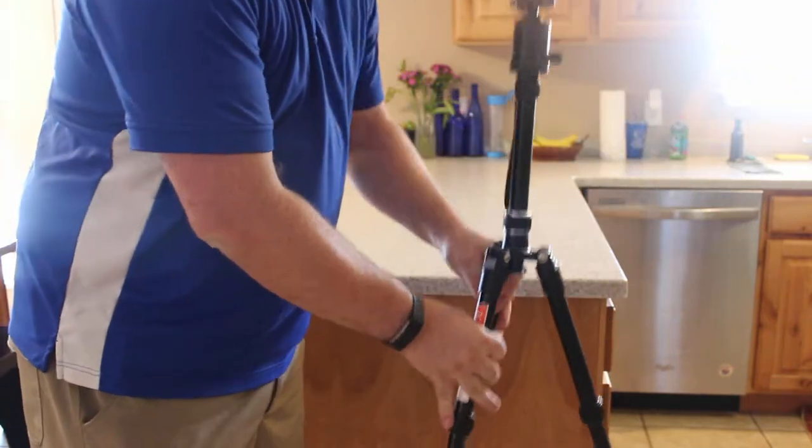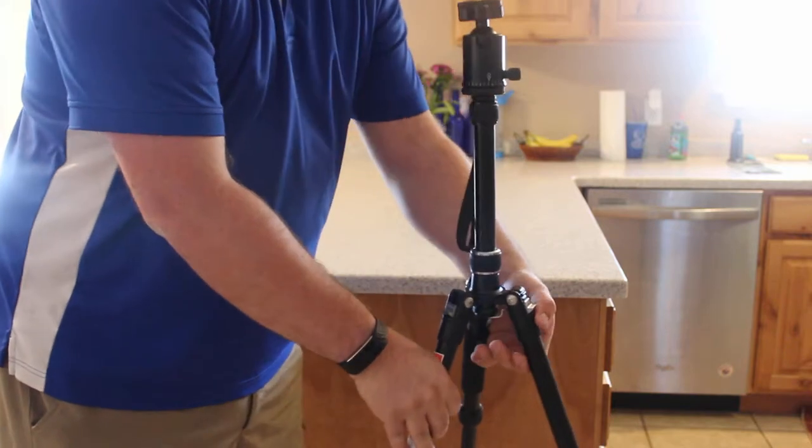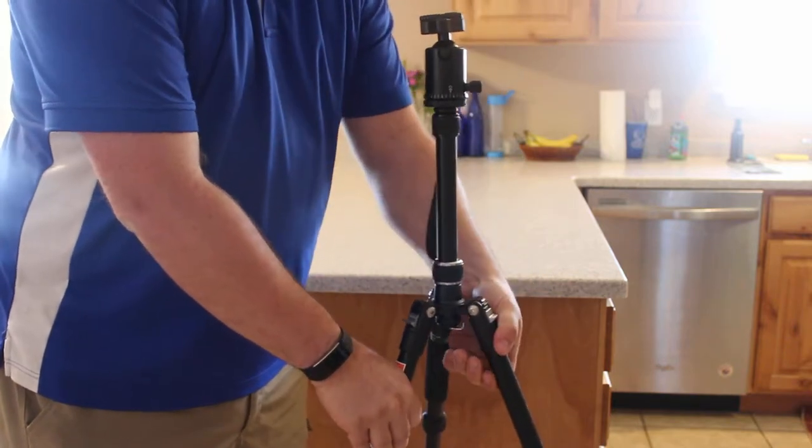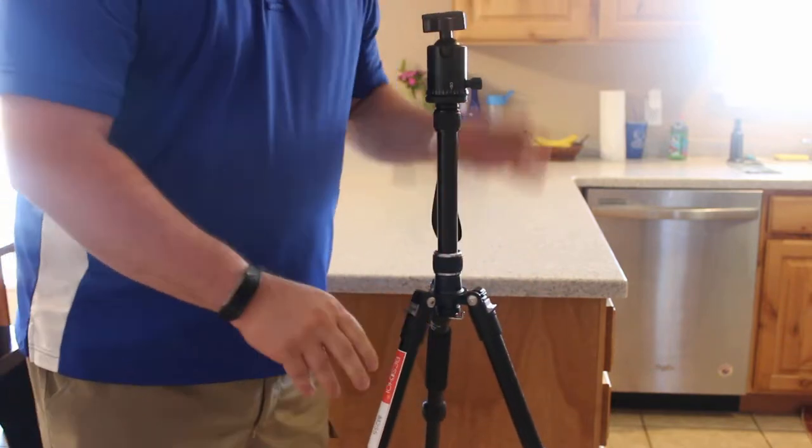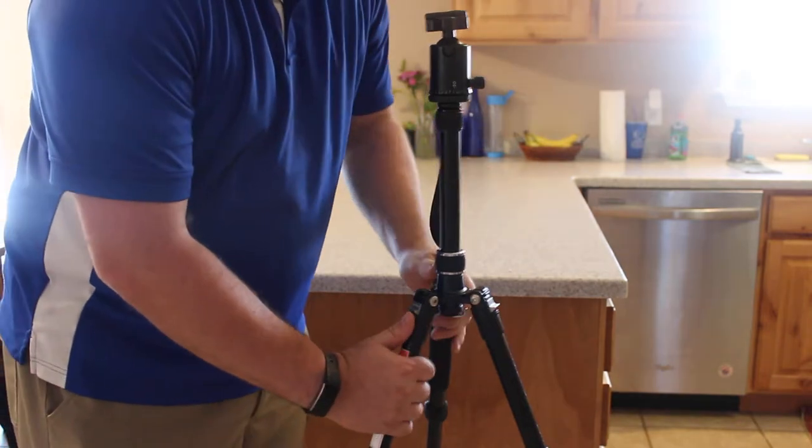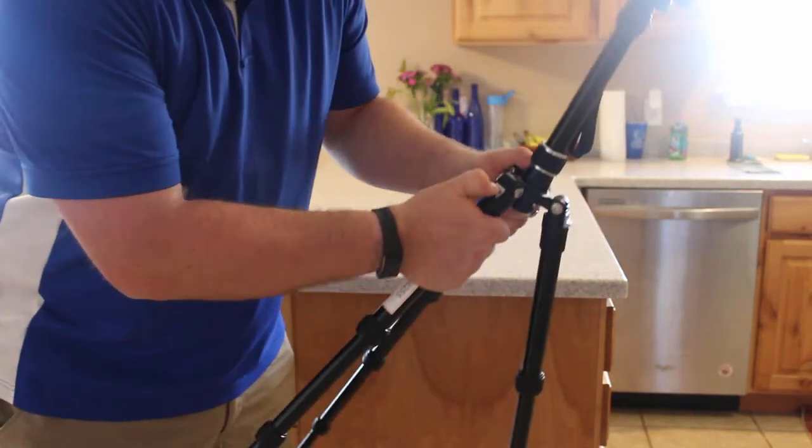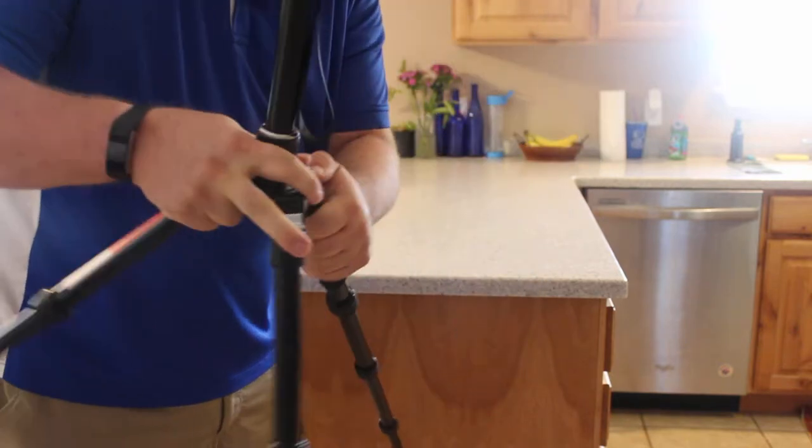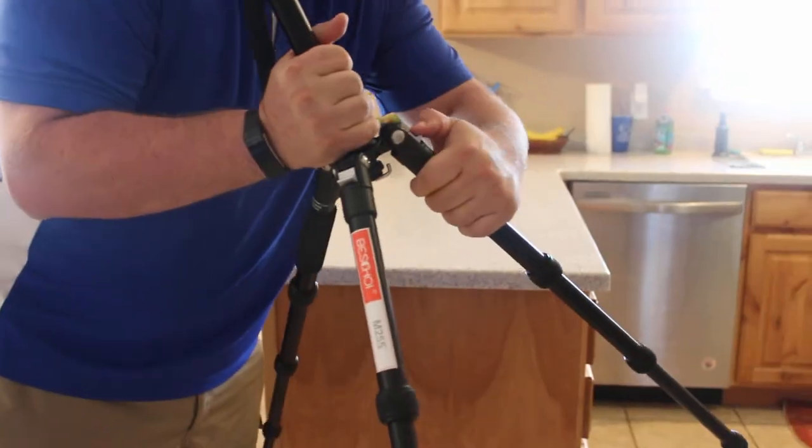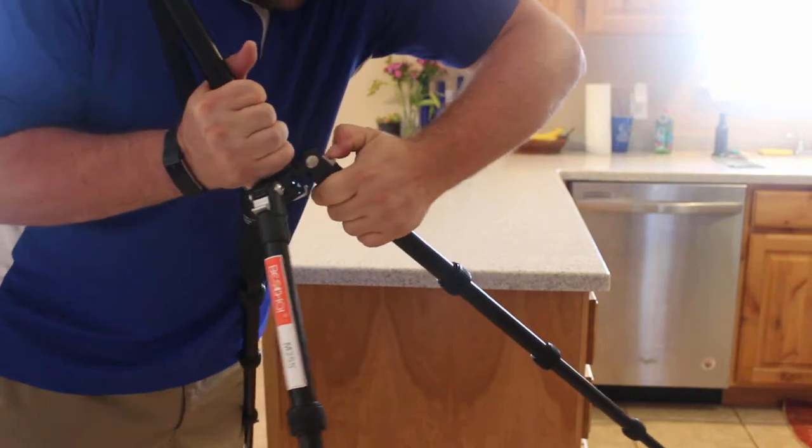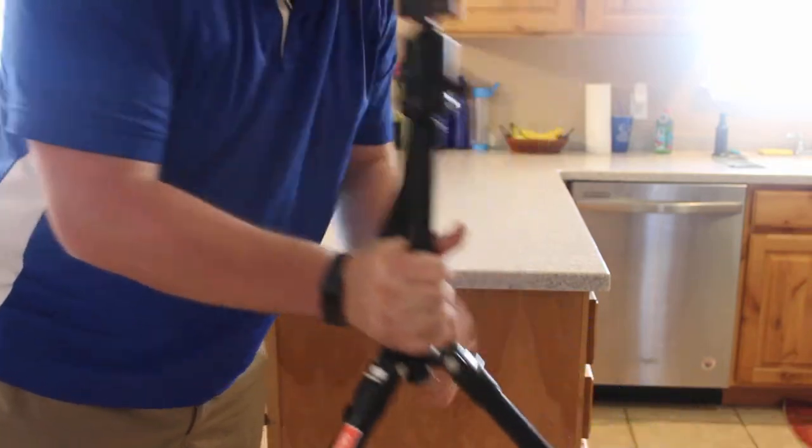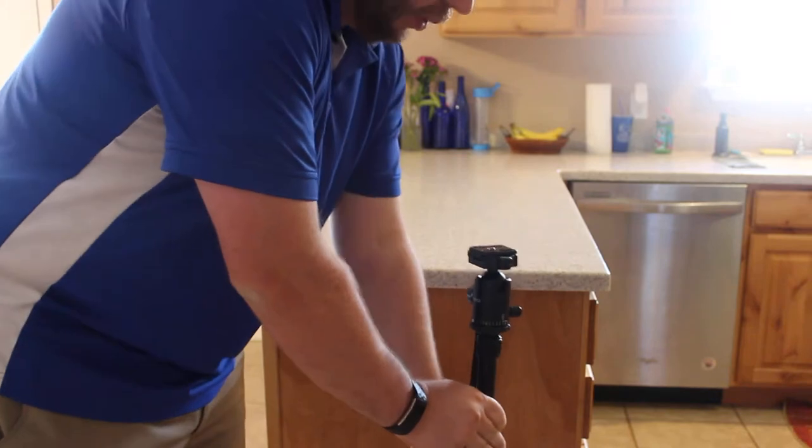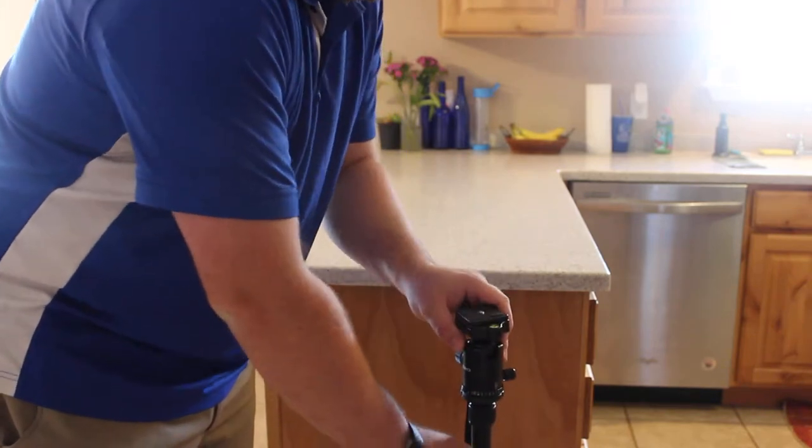But rather than just having one setting for it standing, so right now I have the legs fully extended, and this is the height. What I can do is it has these nifty little levers. I can actually adjust it. I can go up a level on each, just by clicking that through. And now I've got wider legs. I can go all the way down to here.